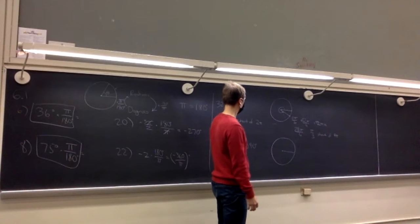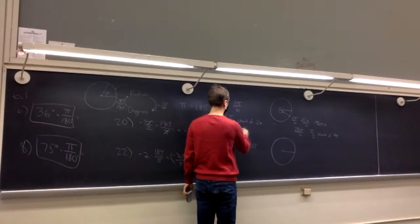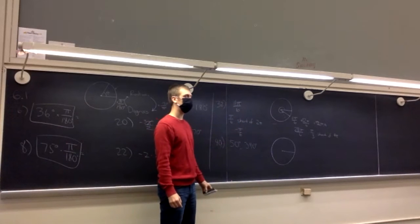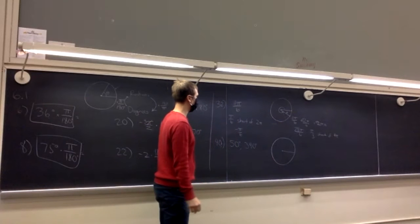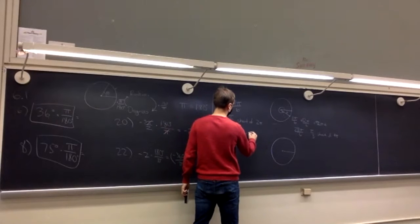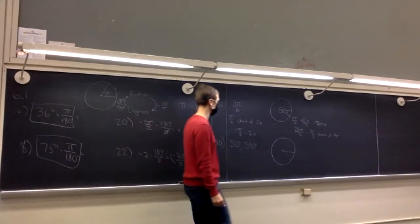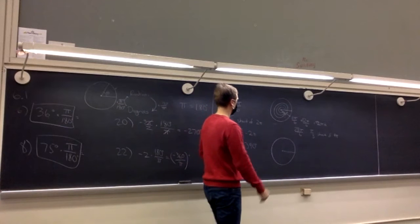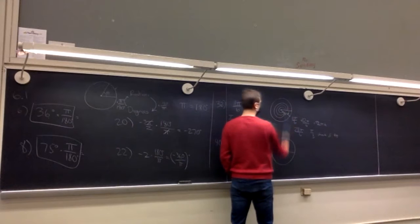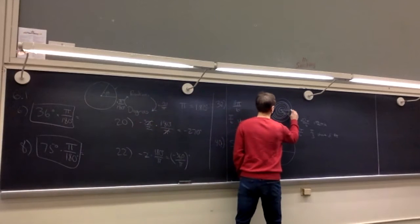For negative coterminal angles, this angle is π over 6 short of 2π, so negative π over 6 going in the opposite direction. Then we subtract 2π to get another coterminal angle in the other direction. In pictures: the first angle, keep going all the way around for the next one; going backwards for the negative coterminal, then around again in the opposite direction.